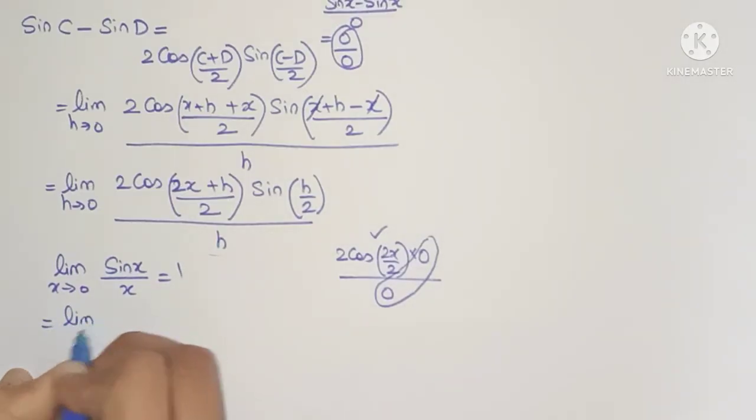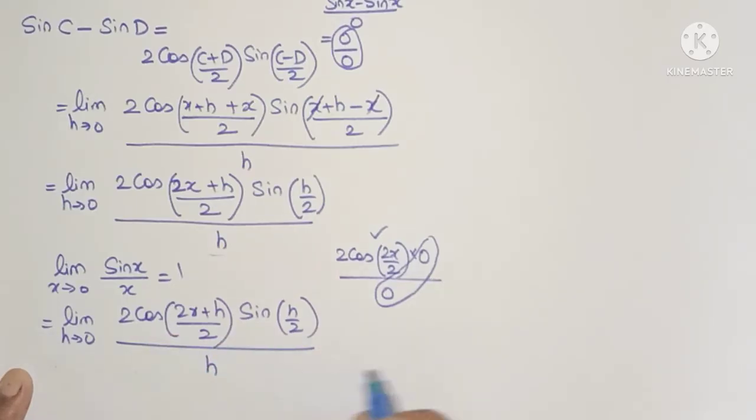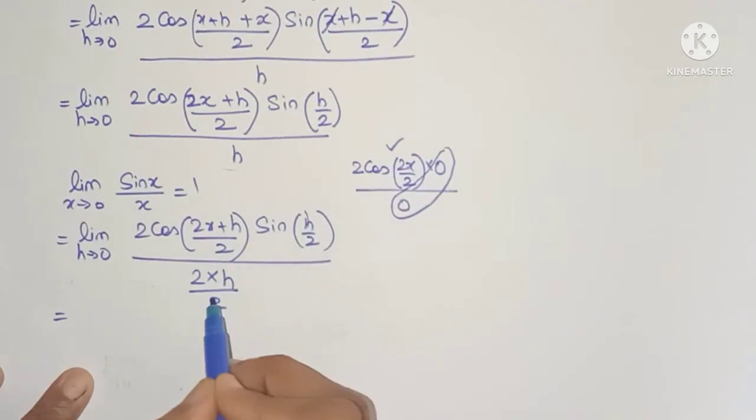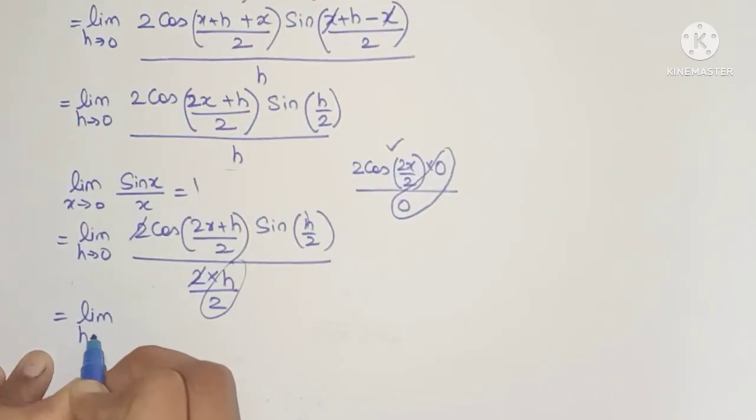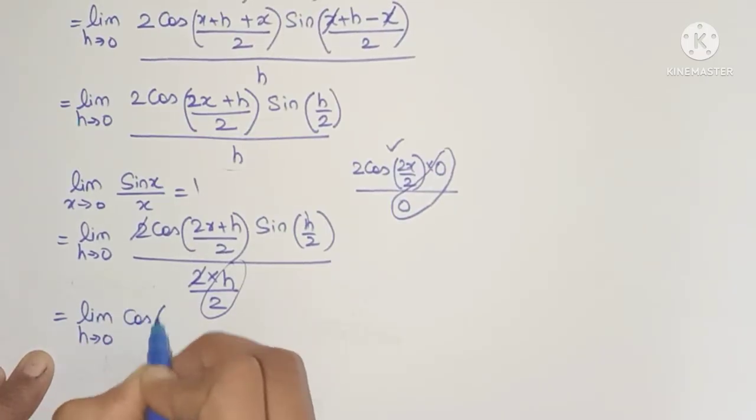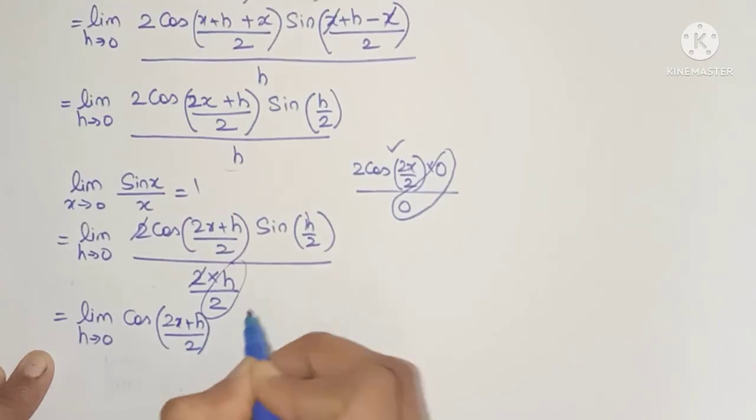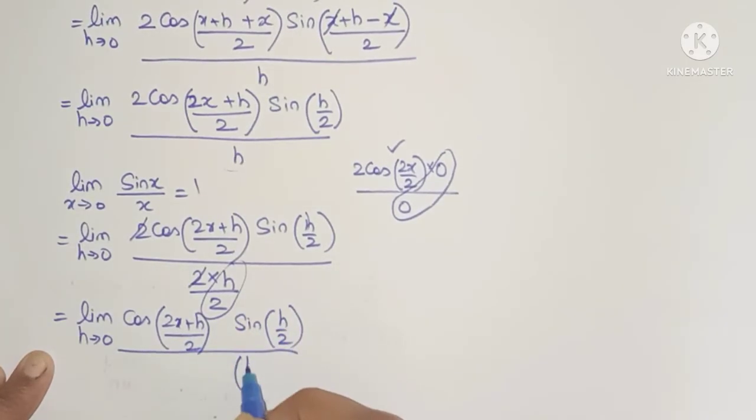So what we are going to do is copy the remaining terms as it is and multiply and divide the denominator by 2. When I multiply and divide, the value of the expression doesn't change. So here we have h by 2 and here also I have h by 2. Now this 2 and 2 will get cancelled. So we are left with limit h tends to 0 cos of 2x plus h by 2, and here I have sin h by 2 divided by h by 2.